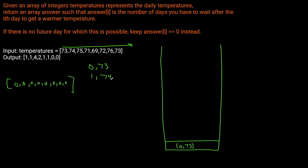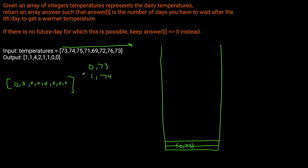Now we're at index one with value 74. We check: is 74 greater than the value at the top of the stack? It is. So we need to pop this element from the stack, because if we appended index 1 with value 74, remember we want our stack to be monotonic decreasing, and this would make it increasing. So we get rid of this element and calculate the number of days between 73 and 74. The difference between index one and index zero is one. So the zeroth index value changes to one. We still need to find a better temperature for the element at index one, so we add it to the stack and continue.